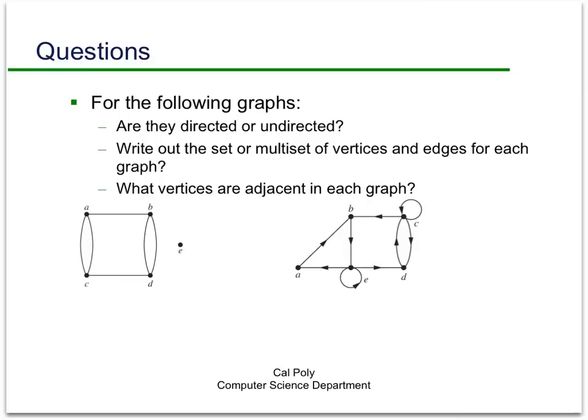This first graph on the left is an undirected graph. The vertex set is V = {a, b, c, d, e}, and the edge multi-set is equal to {(a, b), (a, c), another copy of (a, c), (c, d), (b, d), (d, b)}, and I think I said (a, b) at the beginning. So that's the edge set.